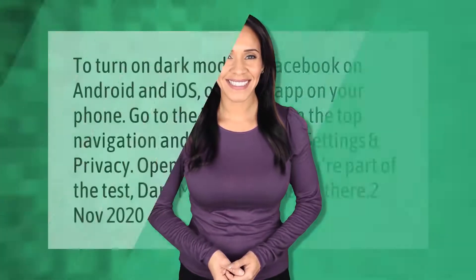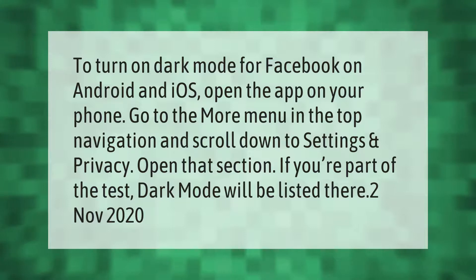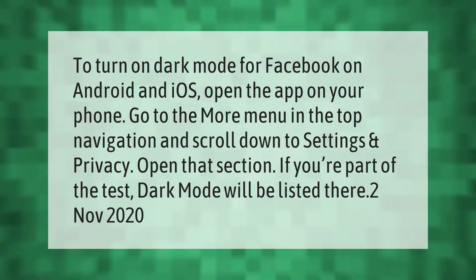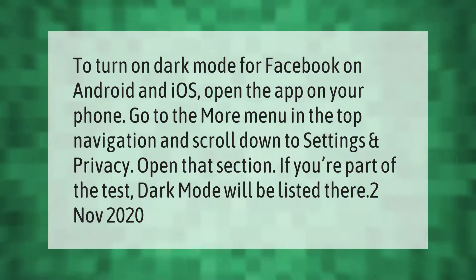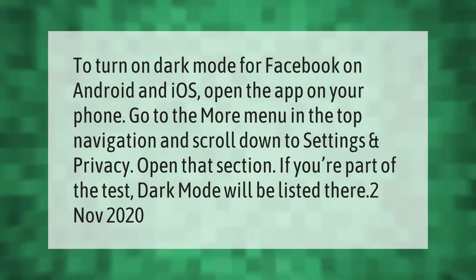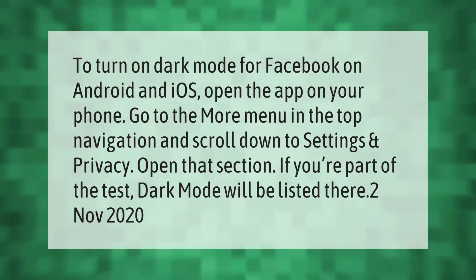To turn on dark mode for Facebook on Android and iOS, open the app on your phone. Go to the more menu in the top navigation and scroll down to Settings and Privacy. Open that section — if you're part of the test, dark mode will be listed there.